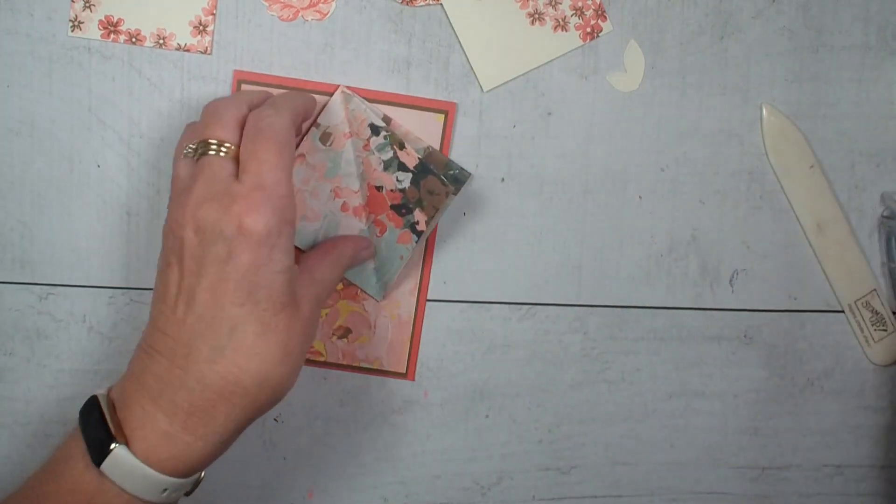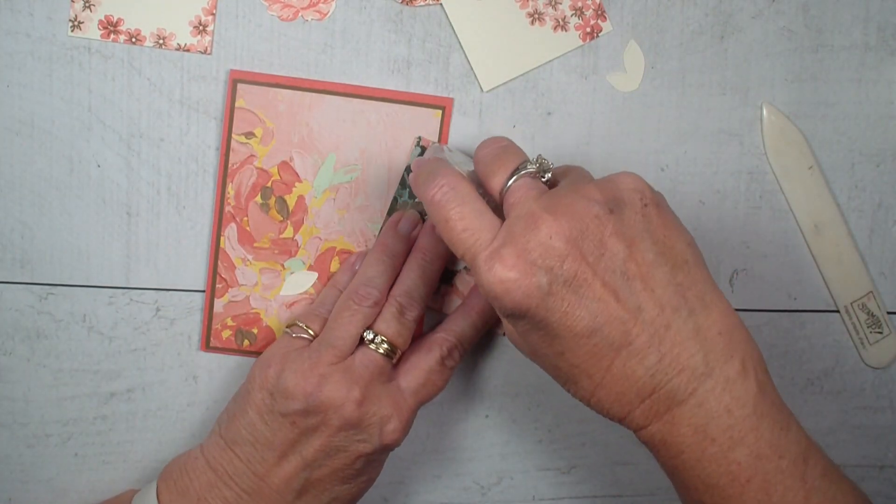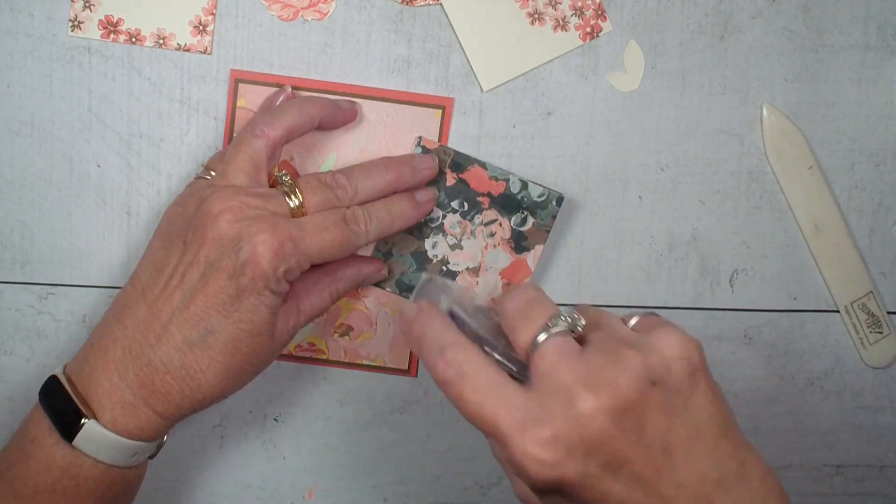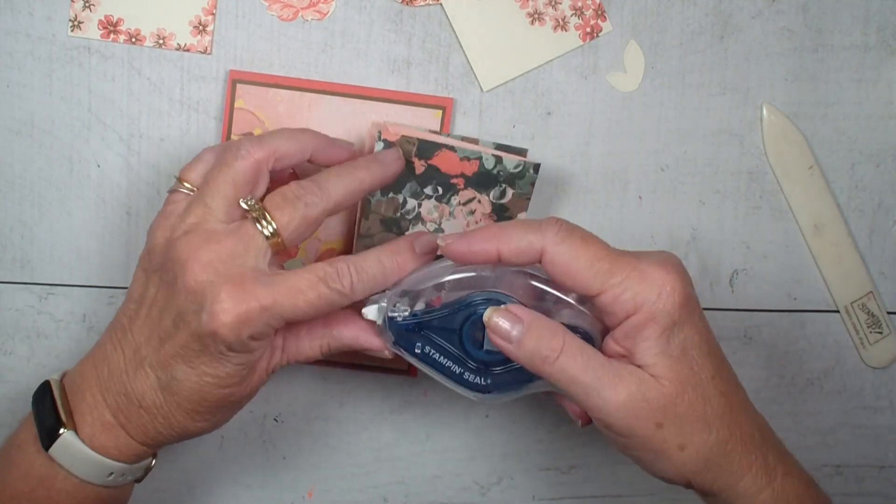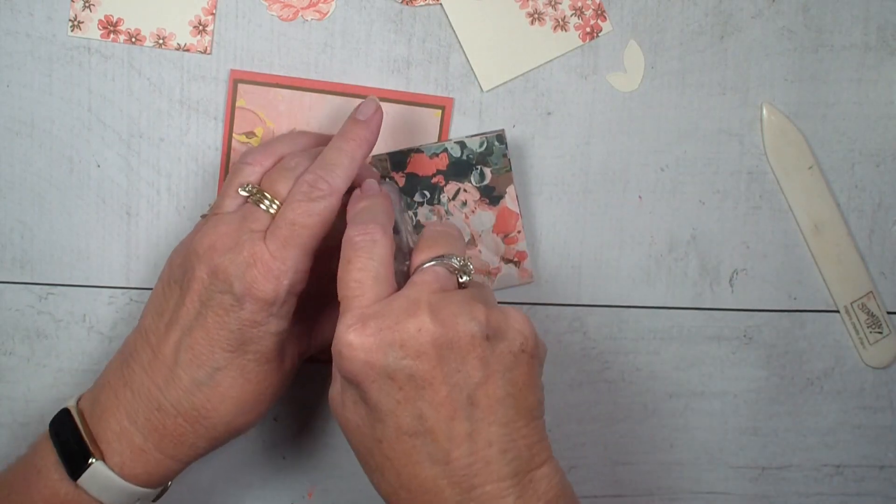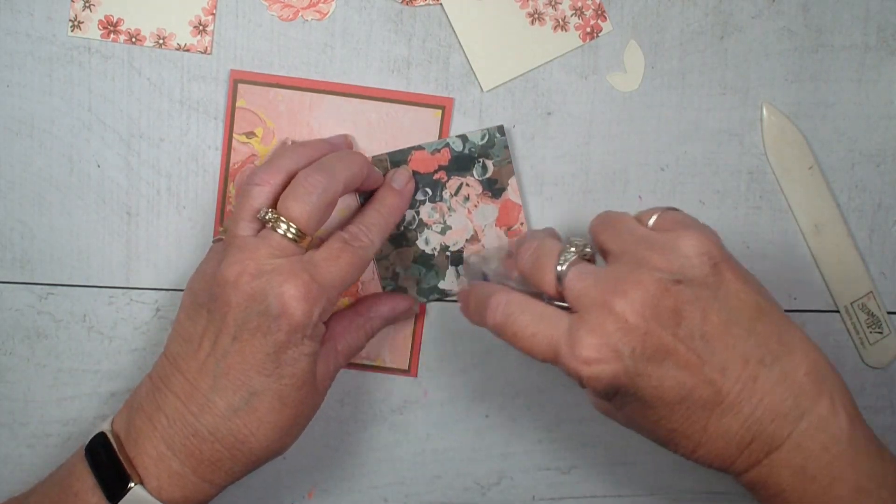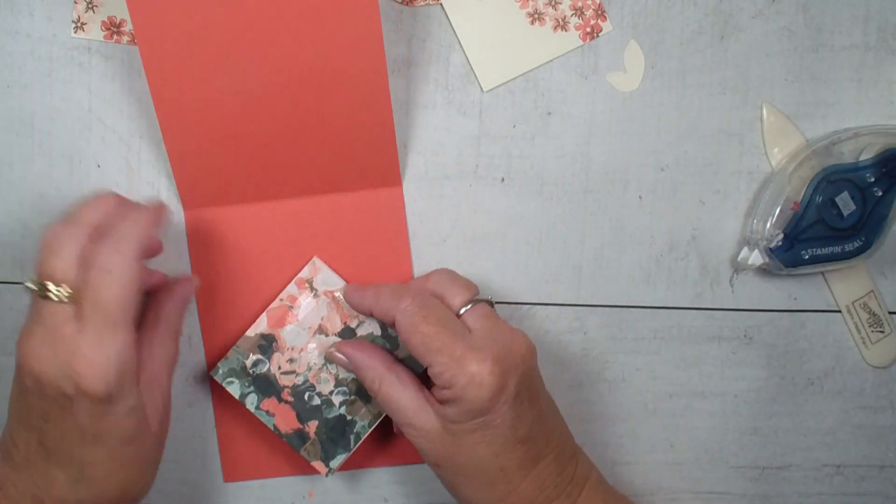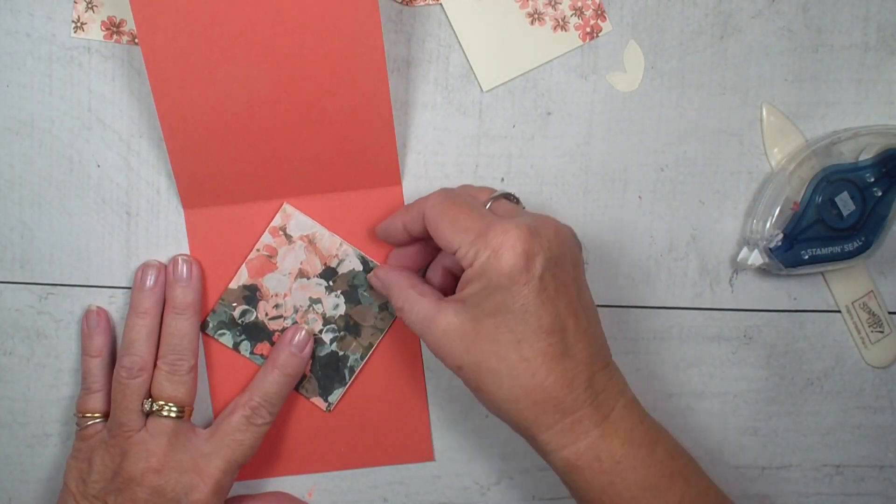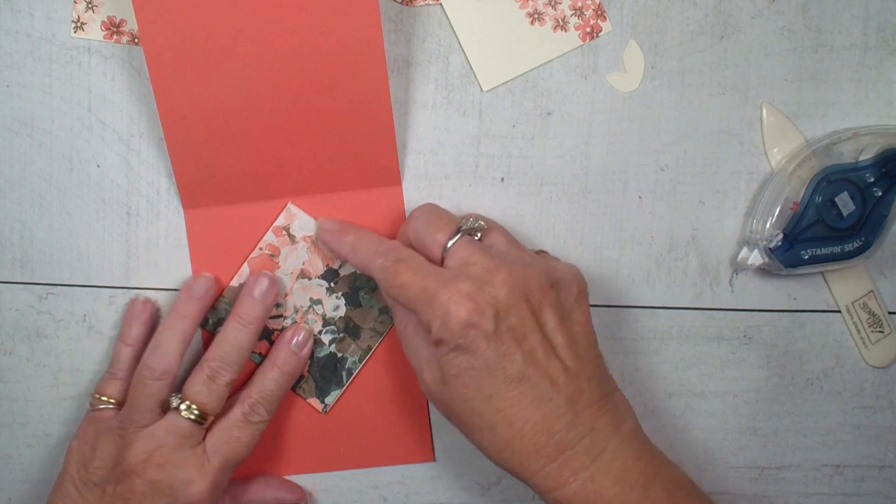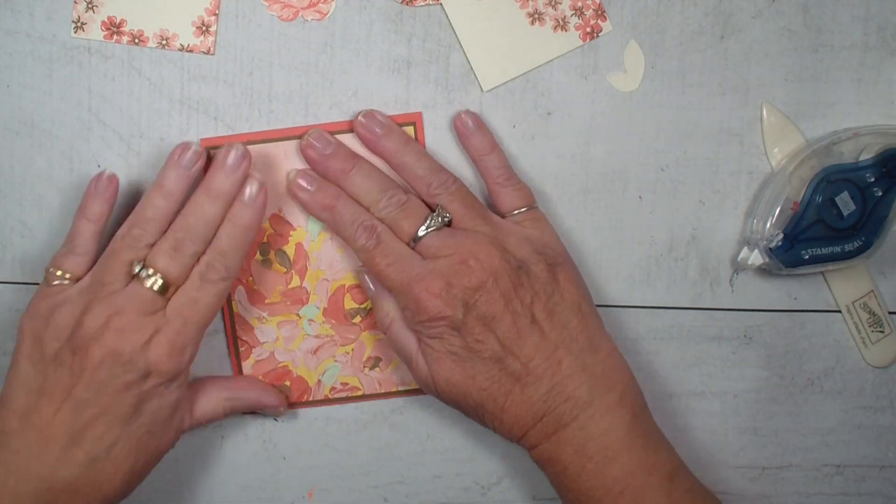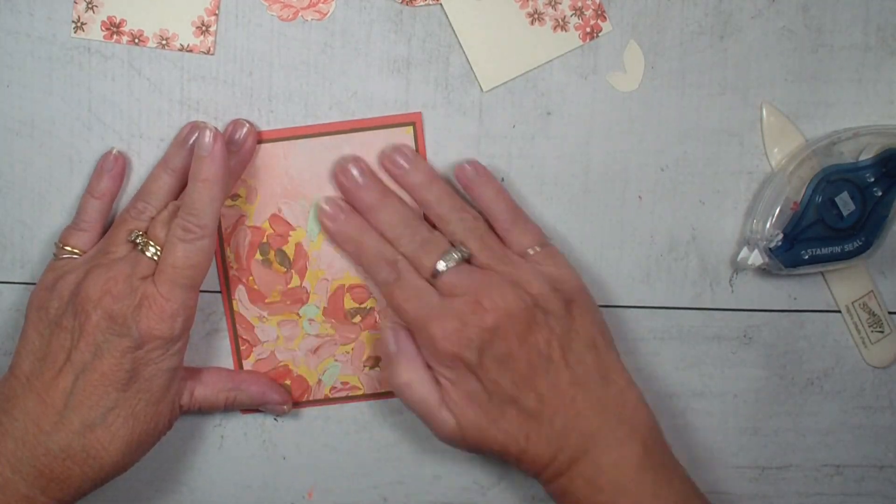This is going to go on the inside of my card. I'm going to take my adhesive and I want a strong adhesive so I'm using the Stampin' Seal Plus. I'm going to put it right in the center of my card like so and then close that center down, press hard to get the adhesive to stick,